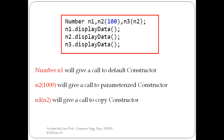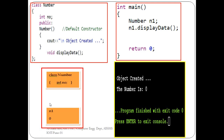In the case of both n2 and n3, a parameter is carried, but the basic difference is: for the parameterized constructor, explicit constant values are passed, whereas for the copy constructor, the entire object is passed as a parameter. This is the only difference between the parameterized constructor and the copy constructor.